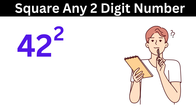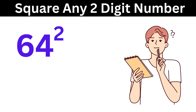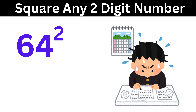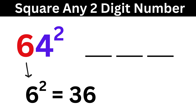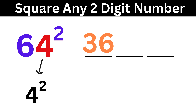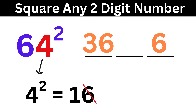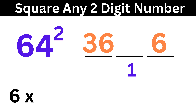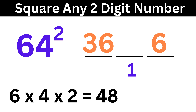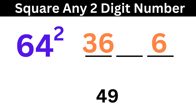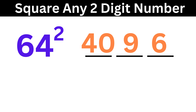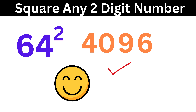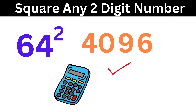Ready for the next example? Let us find the square of 64. Divide into 3 parts. Then 6 squared is 36, so write it here. Then 4 squared is 16, so write 6 here and carry 1 here. Now 6 times 4 times 2 equals 48. Add this 1 to it to make it 49. Write this 9 here, and carry 4 here. Add this 4 with 36 to make it 40, and we are done. The answer is 4096. That was faster than a calculator — we are on fire!